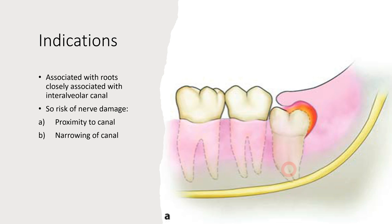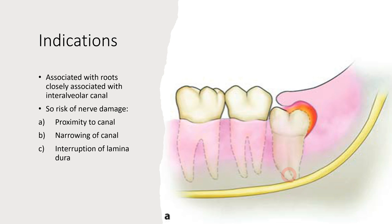Additional radiographic indicators include narrowing of the inferior alveolar canal along the root pathway, which suggests the nerve is very close to the root. Also, interruption of the lamina dura surrounding the roots indicates the roots are in close proximity to the nerve. These signs indicate that normal extraction risks nerve damage, making coronectomy an appropriate alternative to preserve the nerve.